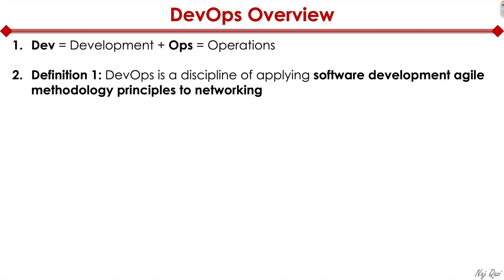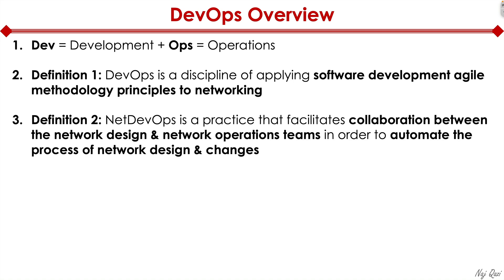That's the first definition of DevOps. The second definition of DevOps — and I'm using another term here which is also interchangeably used with DevOps — is called NetDevOps. The net stands for network, of course. NetDevOps is a practice that facilitates collaboration between the network design and network operations teams in order to automate the process of network design and changes.